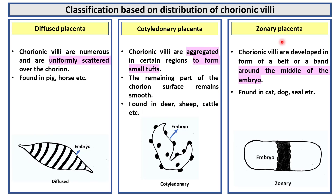Zonary placenta. In zonary placenta, chorionic villi are developed in the form of a belt or band around the middle of the embryo. This is found in cat, dog, seal, etc.